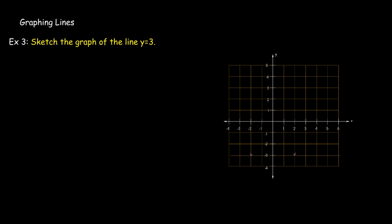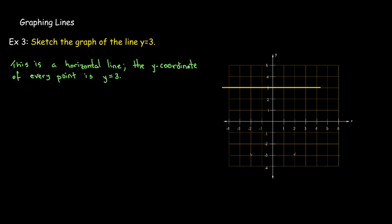Now the line y equals 3, obviously this is a special case, right? y equals 3, y equals some number. It is a horizontal line. And the y coordinate of every point is y equals 3. So it's just this line right here, horizontal line.